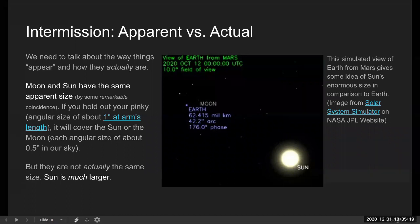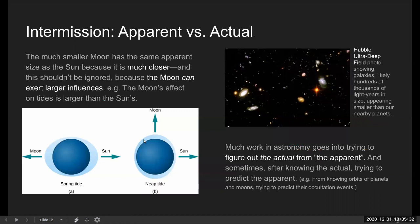What's much harder is figuring out this actual. There was a topic of module one, the debate between geocentrism and heliocentrism. Because what people were working with were the apparent, what you see in the sky. And from figuring out from what you see in the sky to how things actually are, it takes a lot of work.